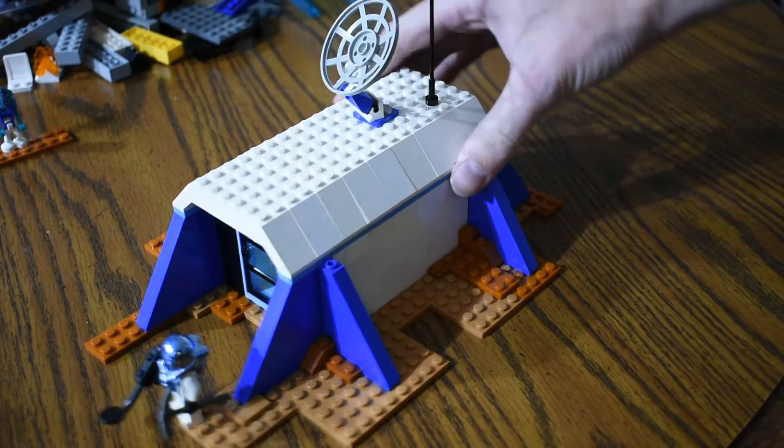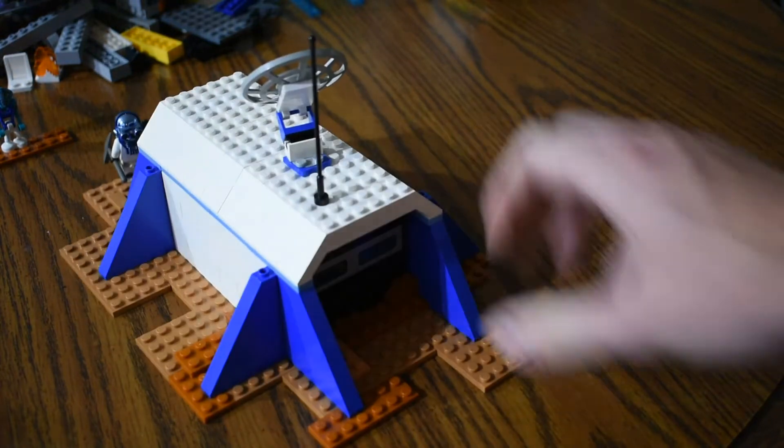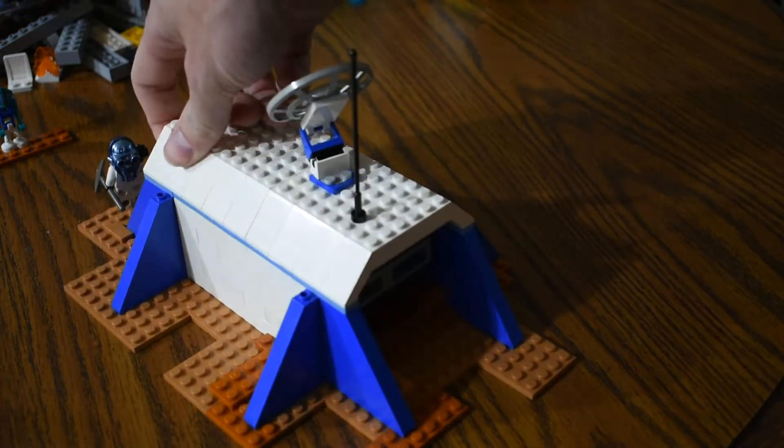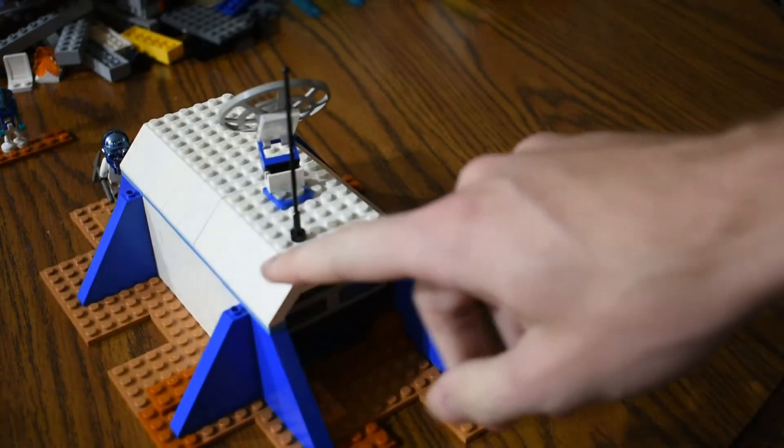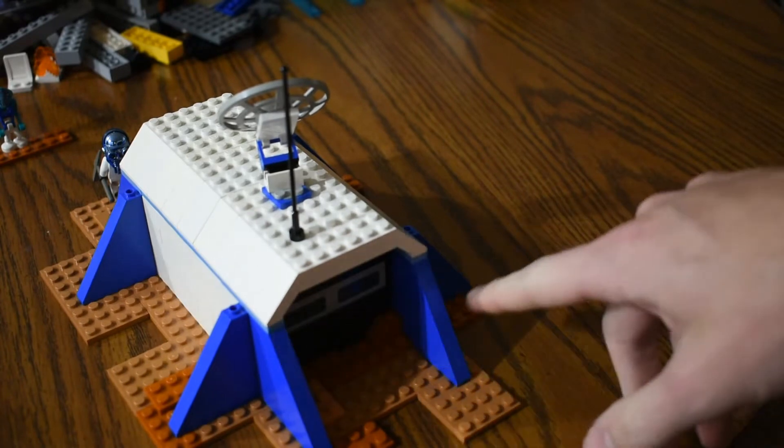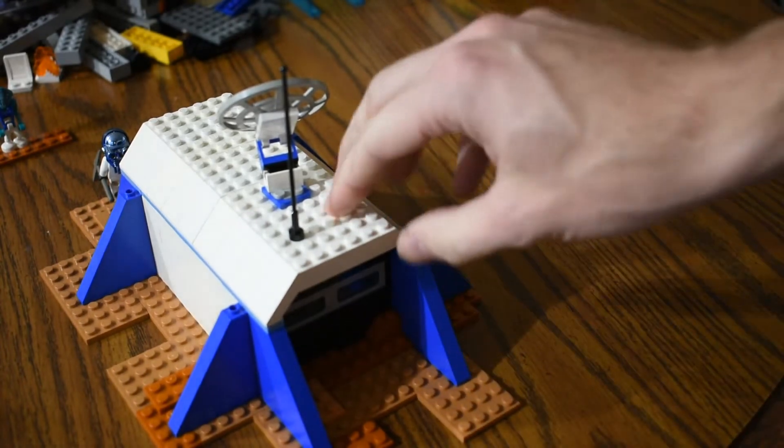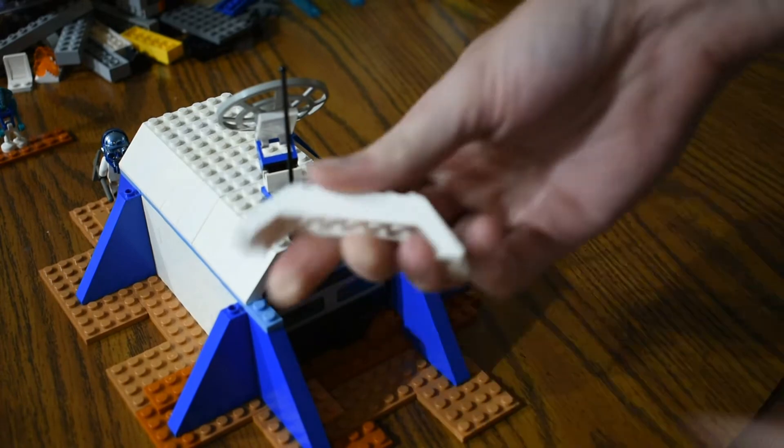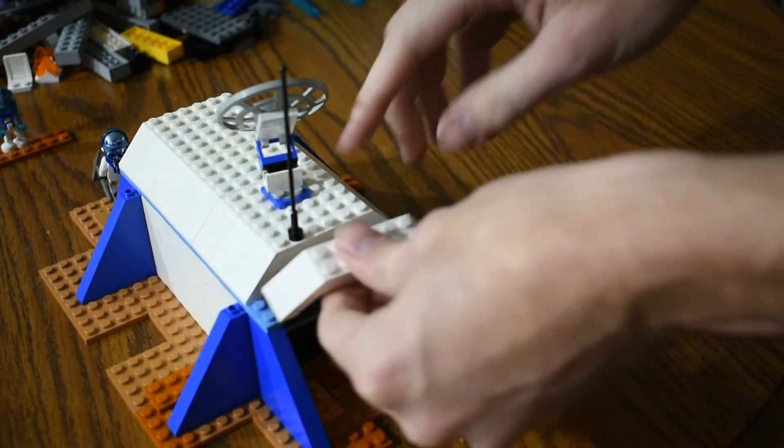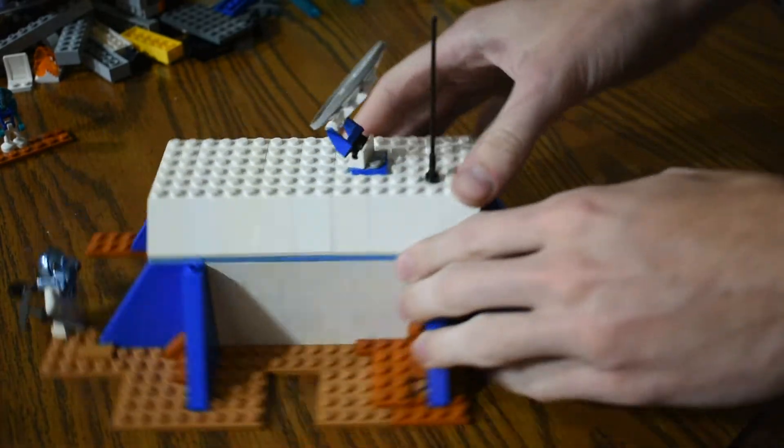And then, again, kind of copying the overhang of the front onto the back here, using these 2x10 white double-ended slopes. So these are really nice for just rapidly building up that roof section.